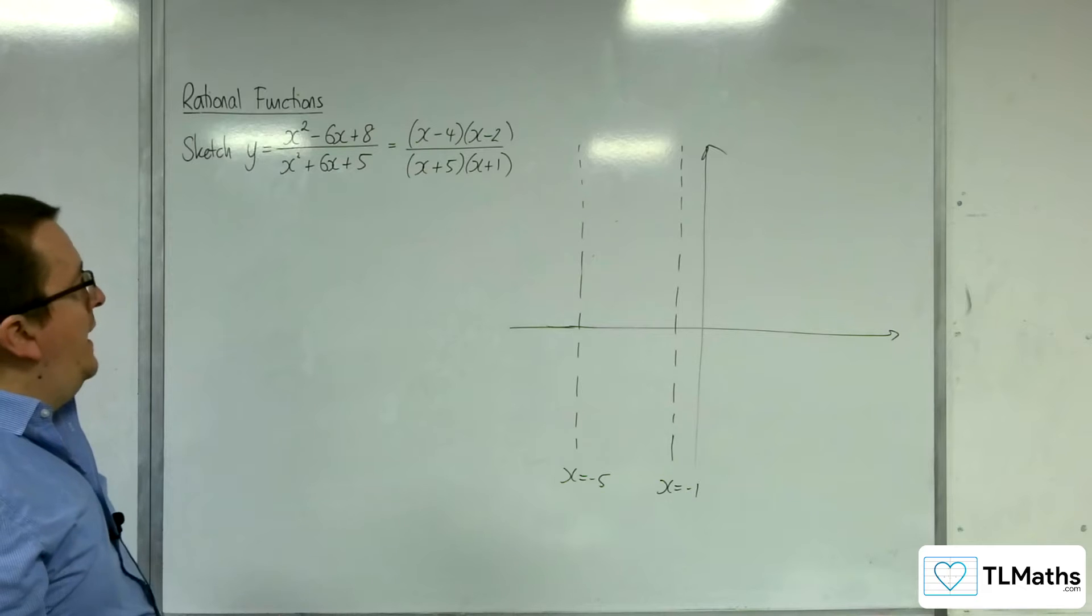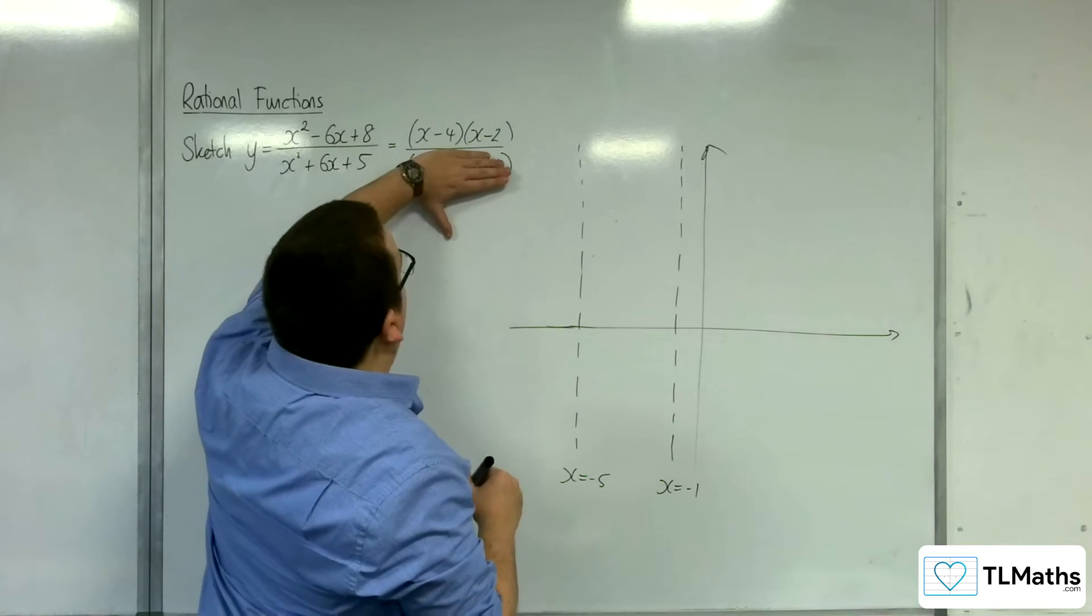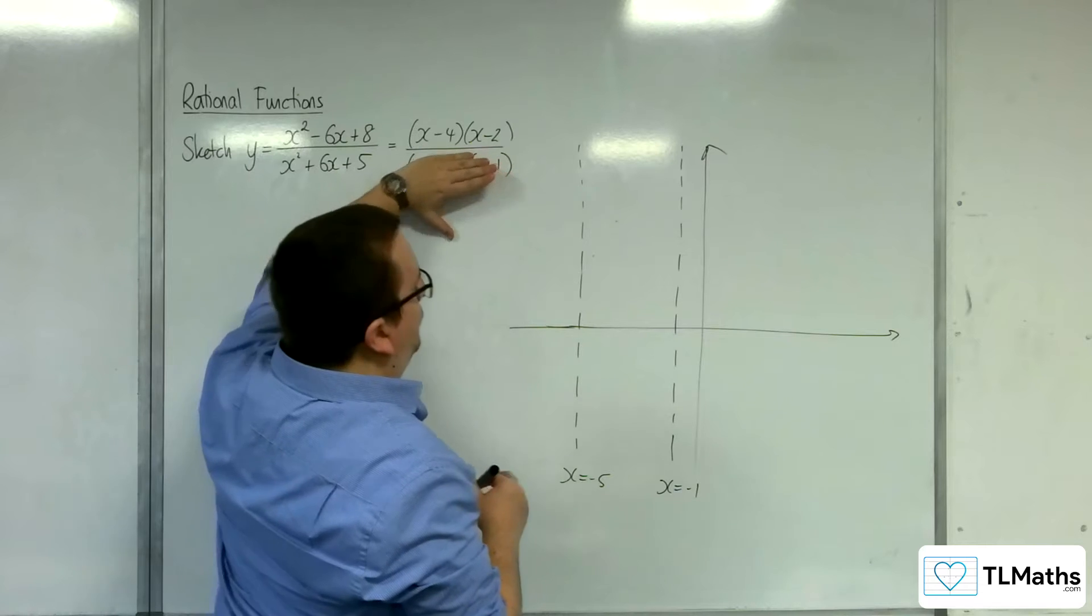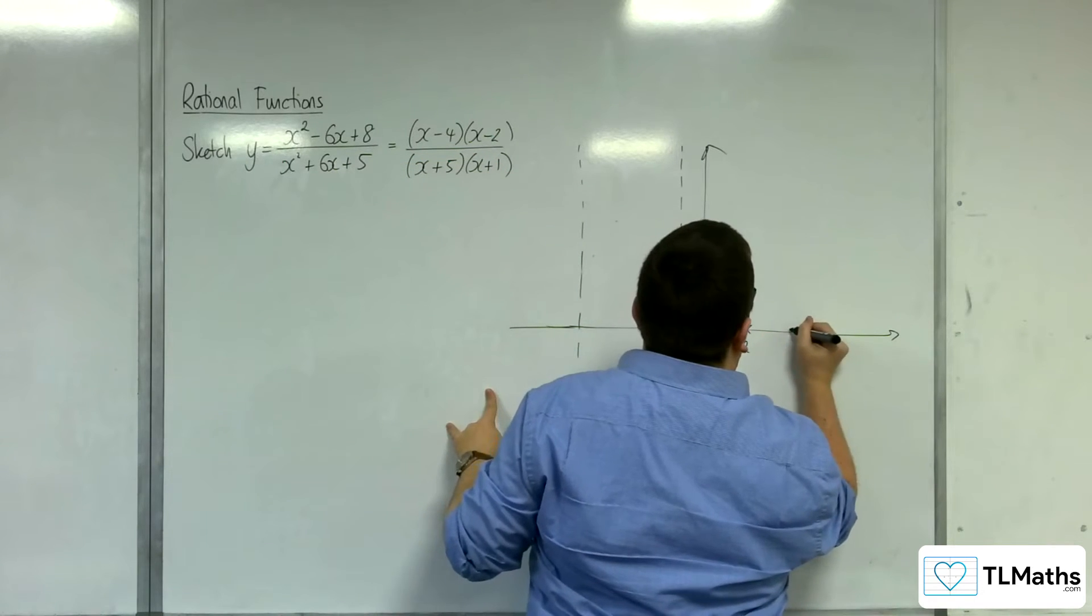Now where does it cross the x-axis? That's when the numerator is 0, so that will be when we're at x equals 2 and x equals 4.